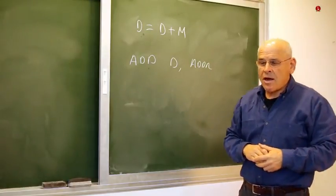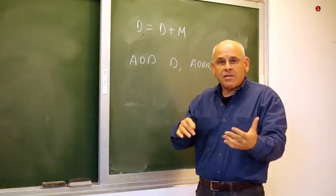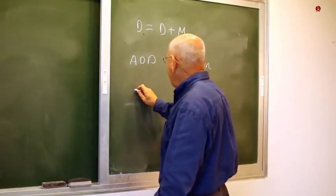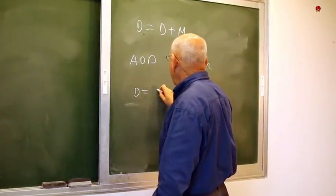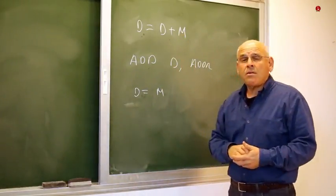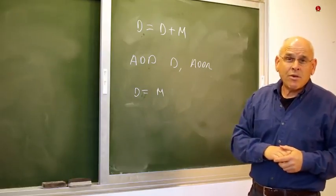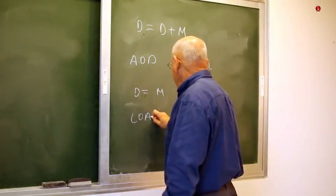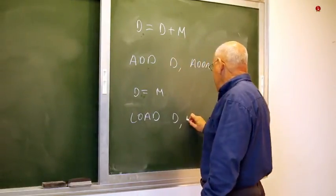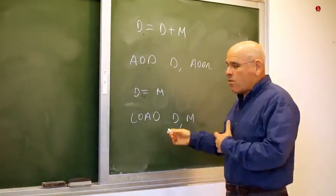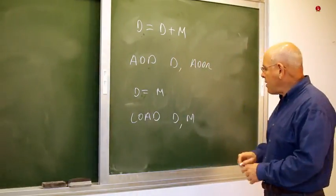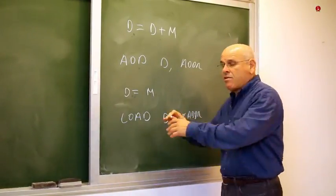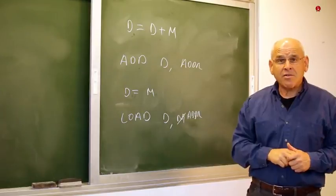Likewise, if you want to put the contents of one register into another register, in HEC you say something like D equals M. Whereas in a normal machine language, typically you would say something like LOAD D, M — and instead of M you can write an address and pack all this information into a single instruction.